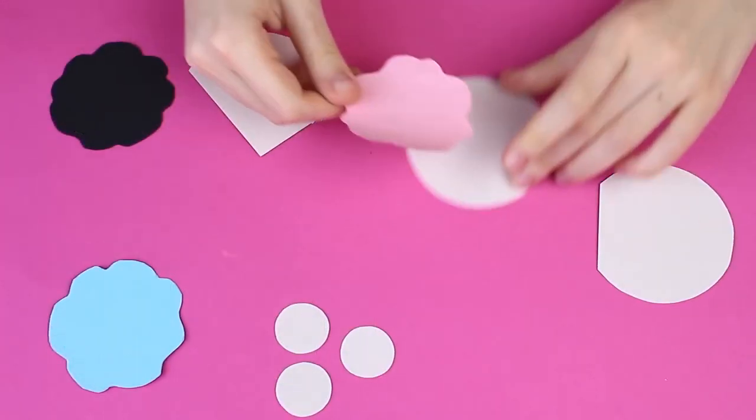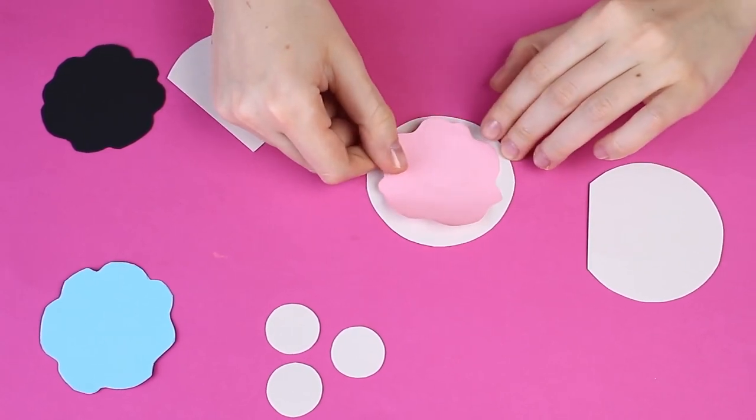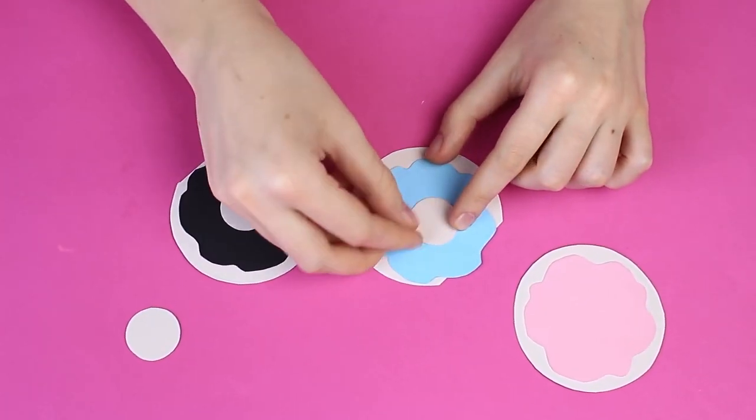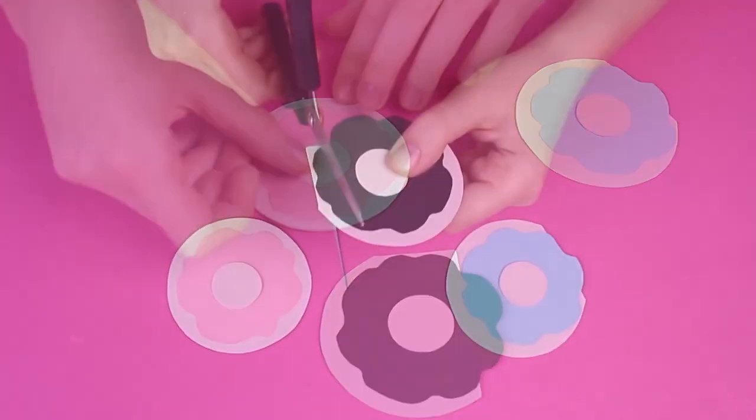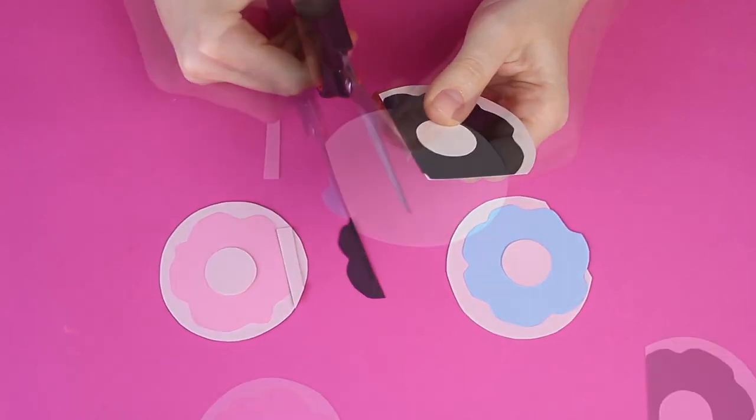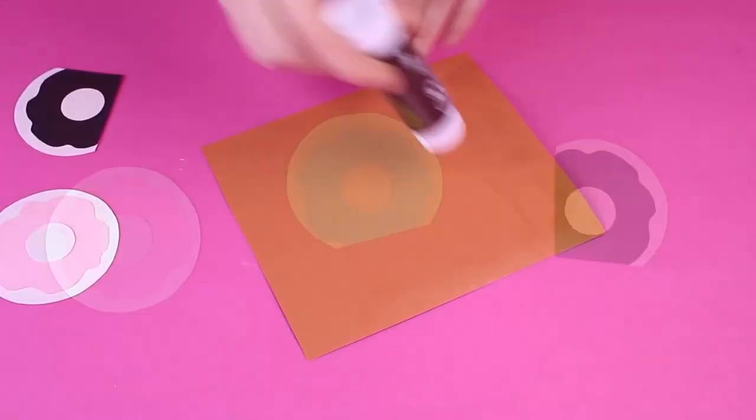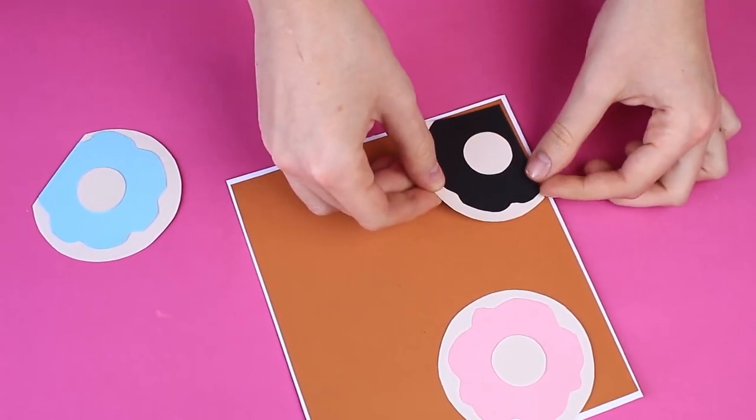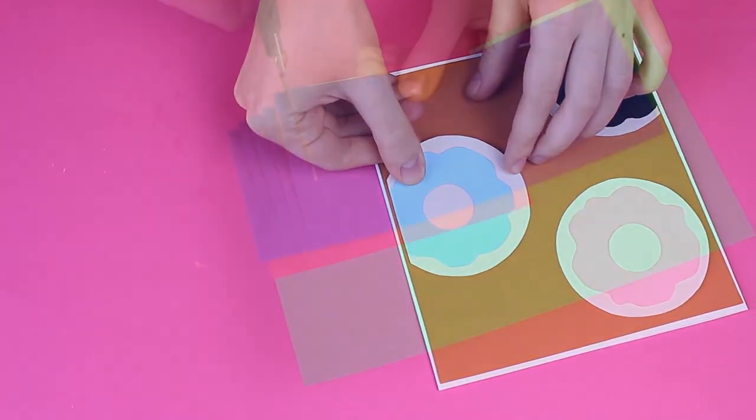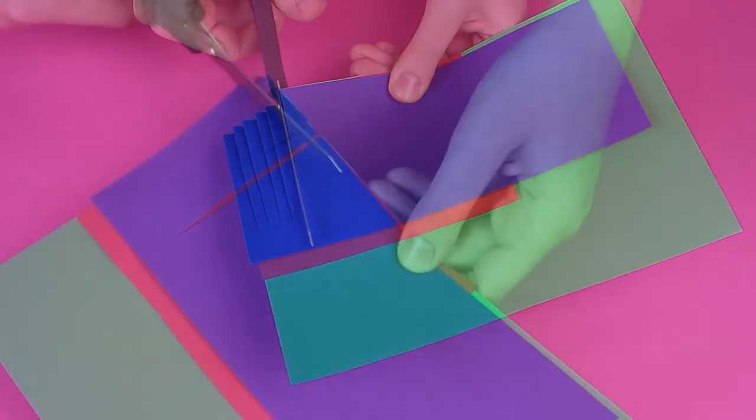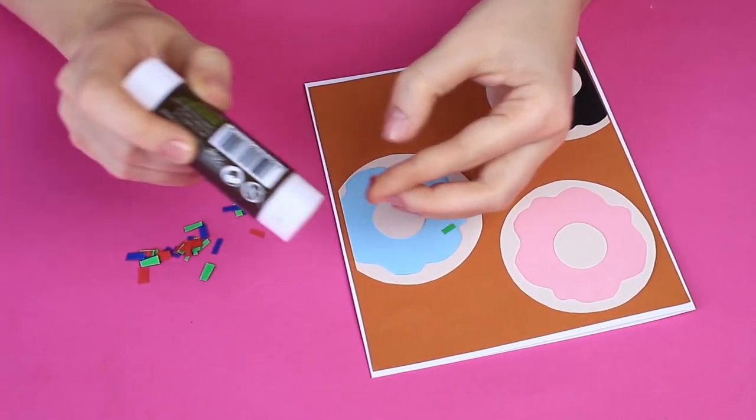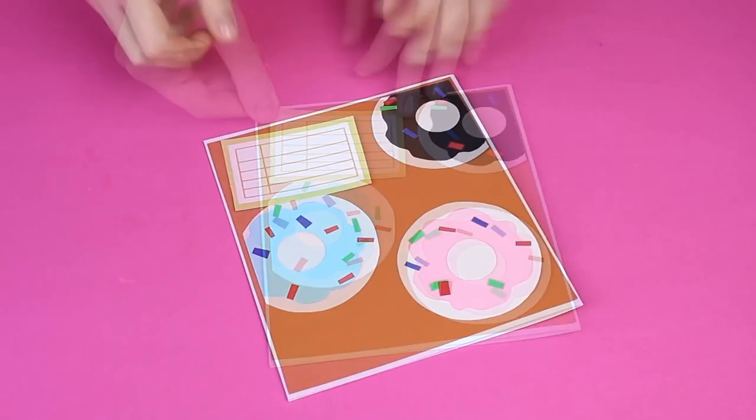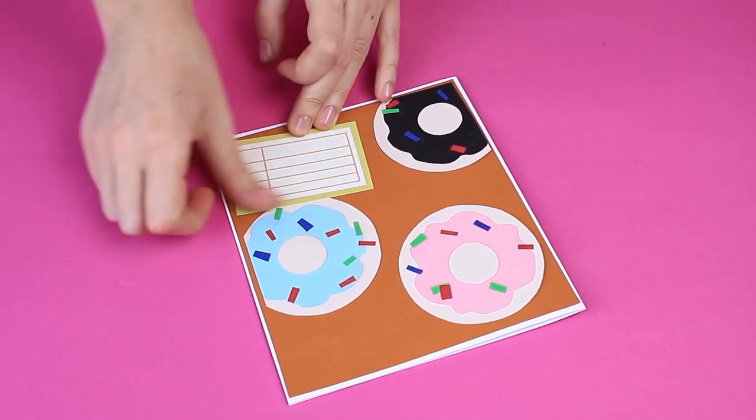Let's assemble the donuts. Attach glazing to the donut circles, put holes in the center, and cut off the excess where necessary. Attach a background to the card front and place the donuts. Make sprinkles by cutting colored paper into small pieces. Decorate the donuts and add a tag. The cool donut card will be a perfect gift for a donut lover.